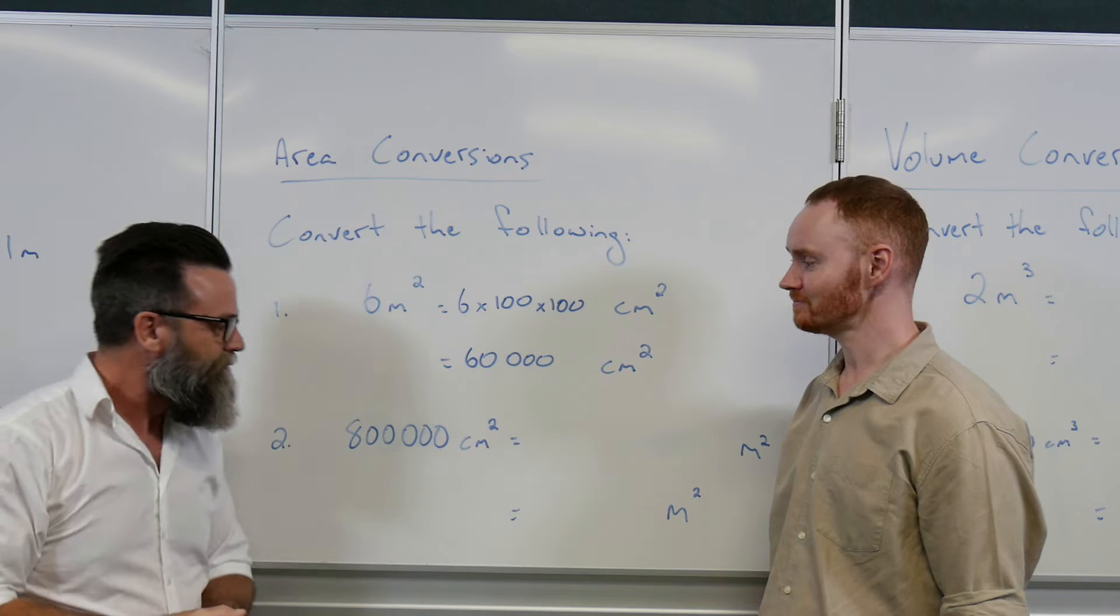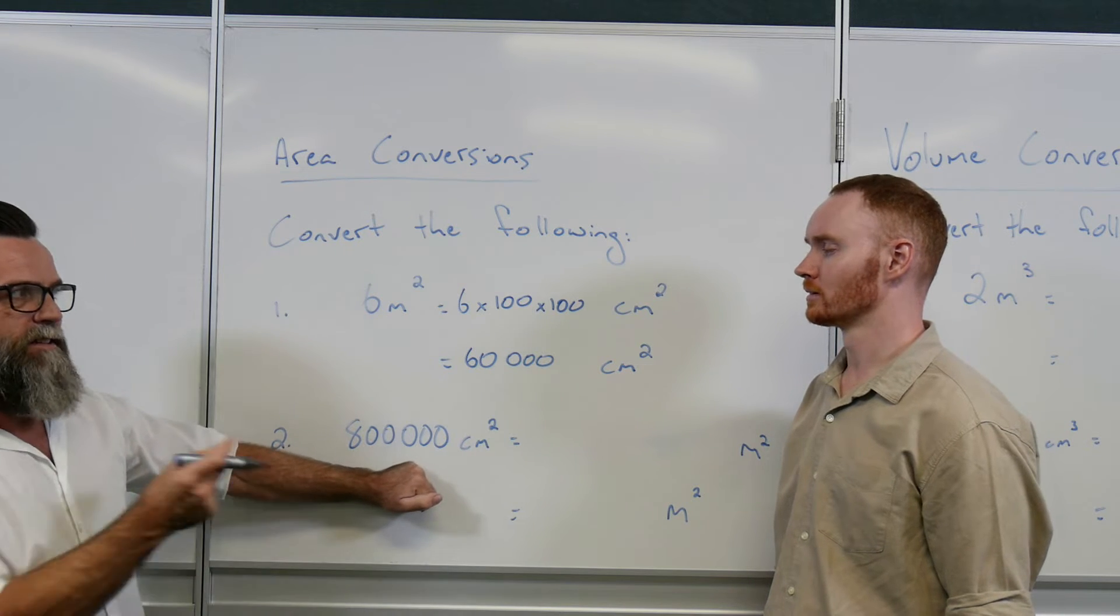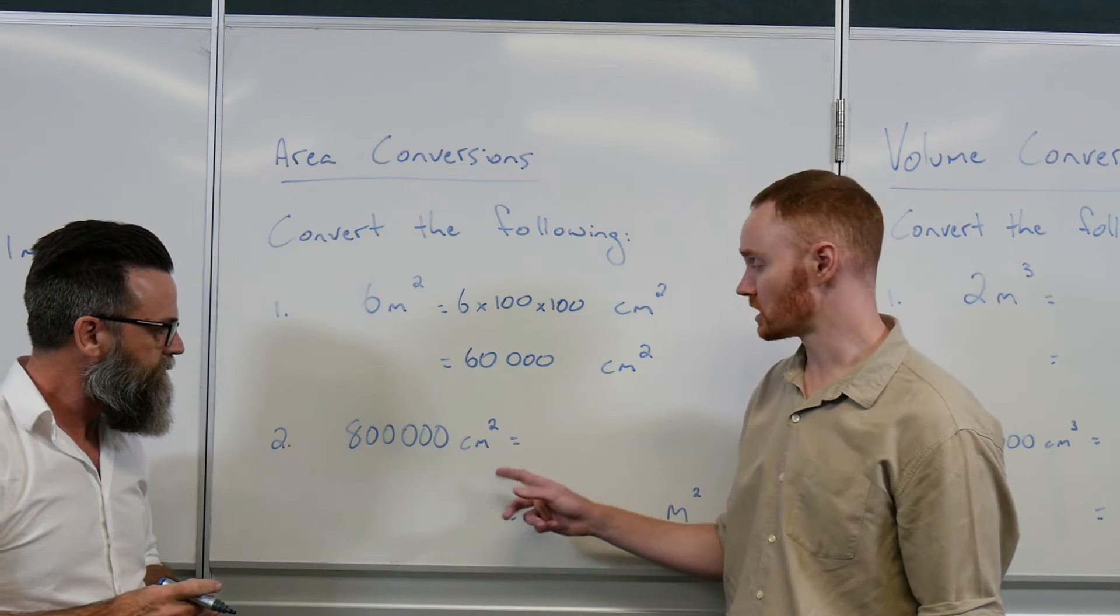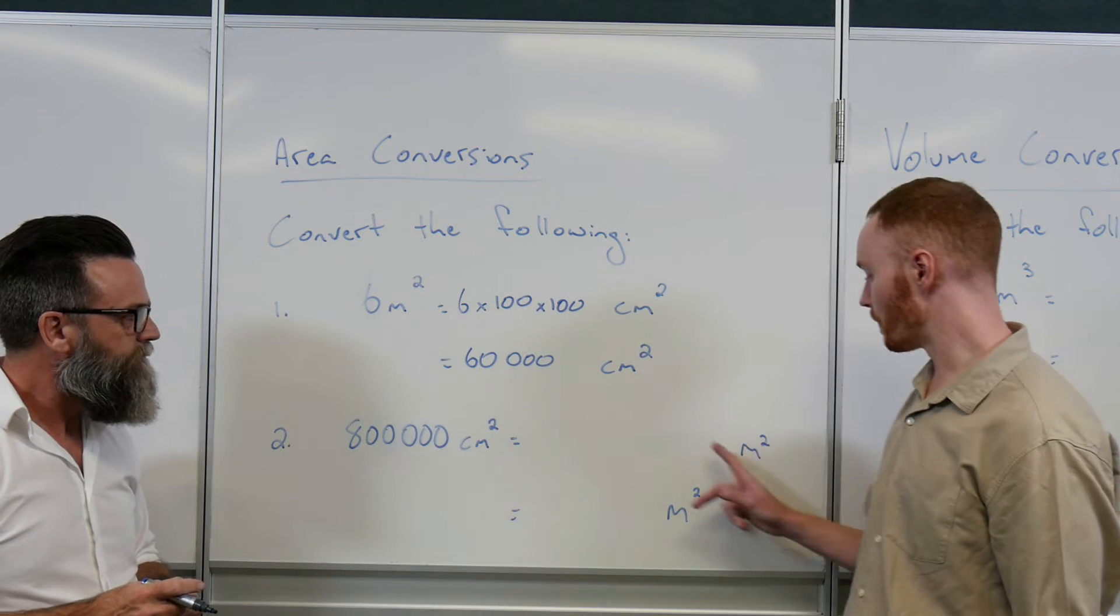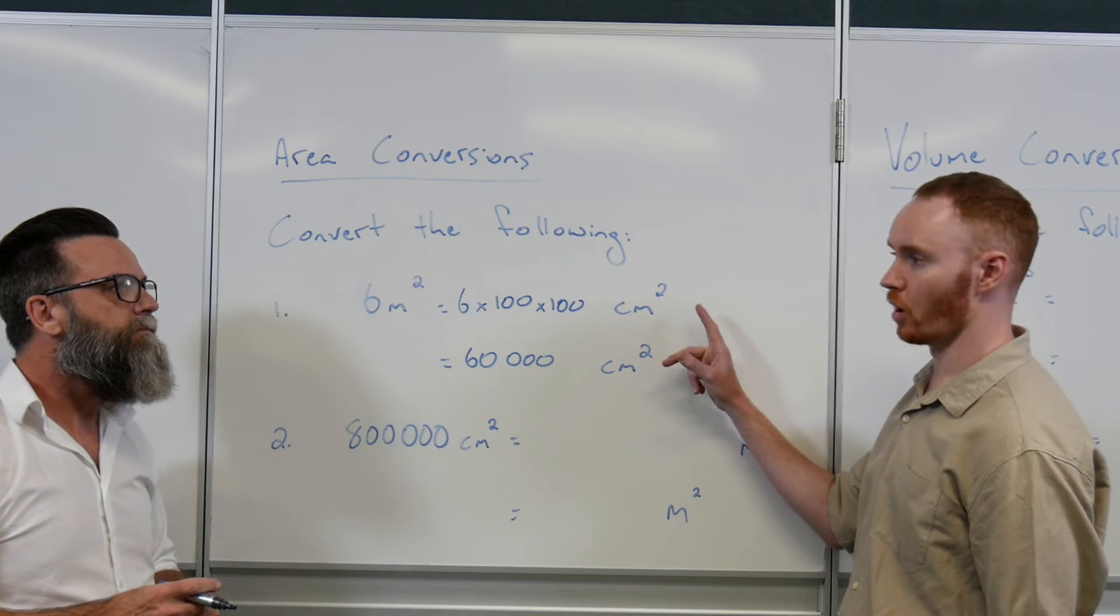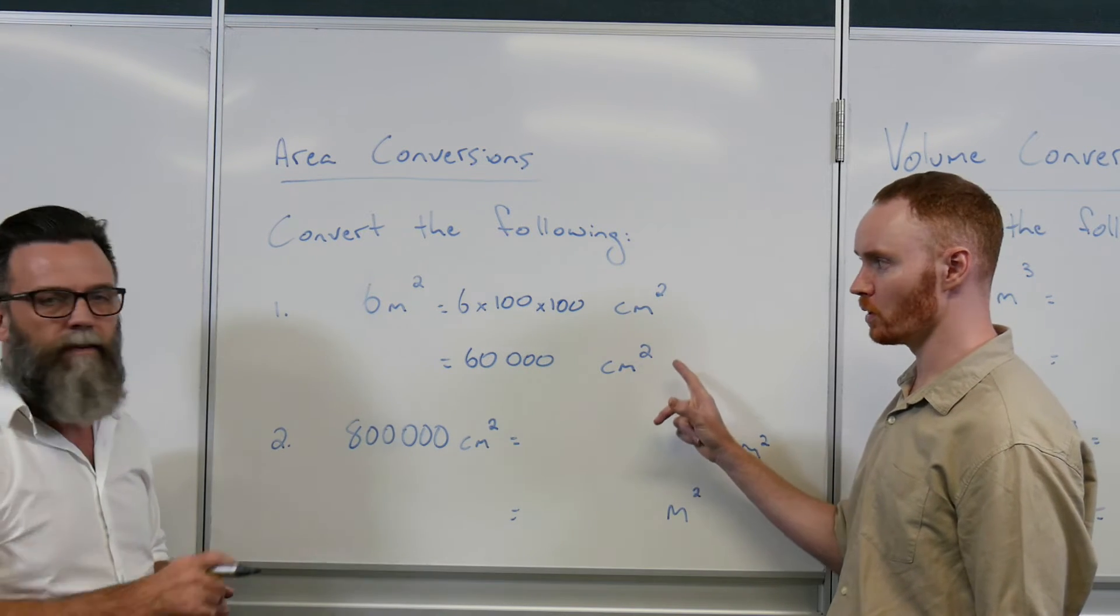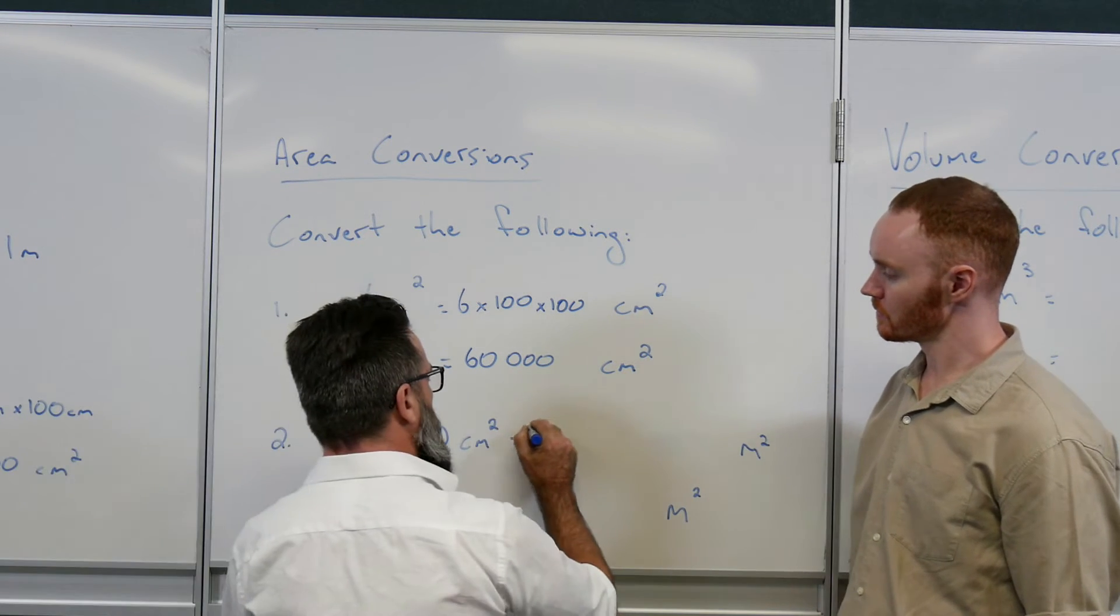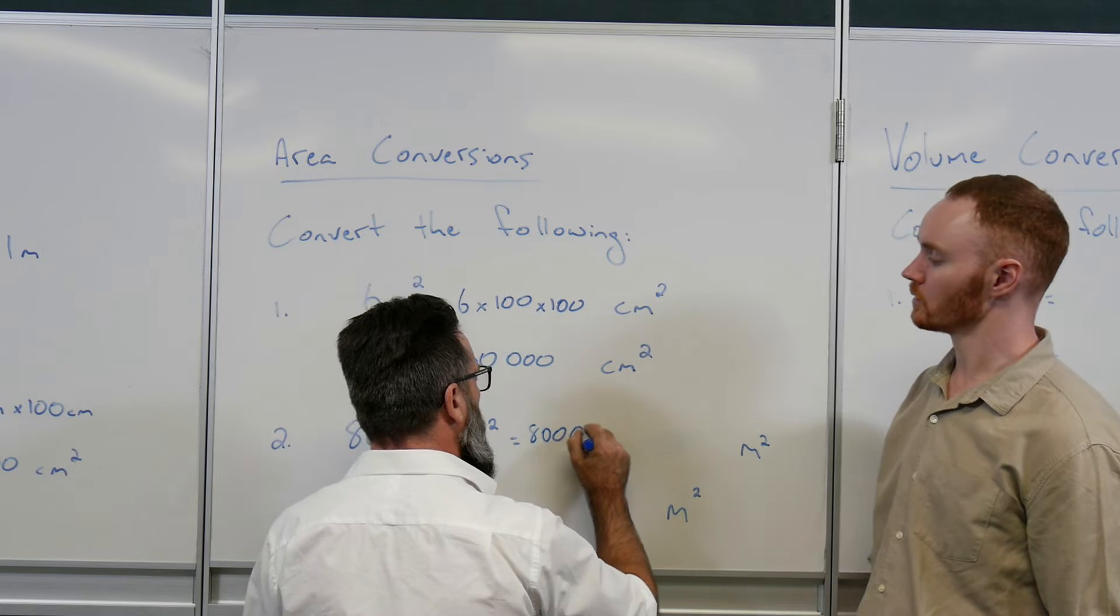So, one of the types of conversions that we could do, we could have six meters squared and we're asked to convert that to centimeters squared. Can you remember how we were talking about doing that, Mr. Savage? Yep. Meters to centimeters squared, we had to multiply by 100 and then multiply by 100 again. Absolutely. We remembered we had to multiply by 100 two times because it's a little two up there. So, I simply take the number out the front, six, and I multiply that by 100.